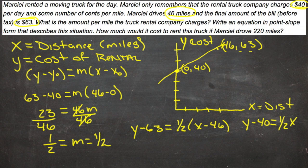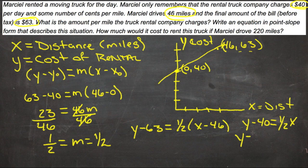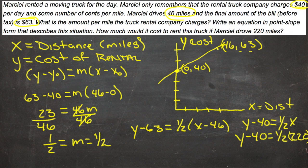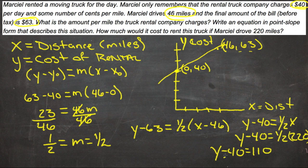Now we need to solve for what happens if he drives 220 miles. That means our x value is 220. So we get y minus 40 equals 1/2 of 220. Half of 220 is 110, so y minus 40 equals 110. Add 40 to both sides and we get y equals 150.